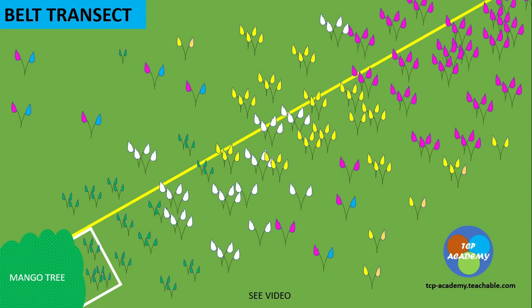We're looking here at a one-meter quadrat. For each quadrat thrown, it would represent one meter. On screen now, we are covering two meters of the transect line to the right, and you can count the number of organisms in each transect.